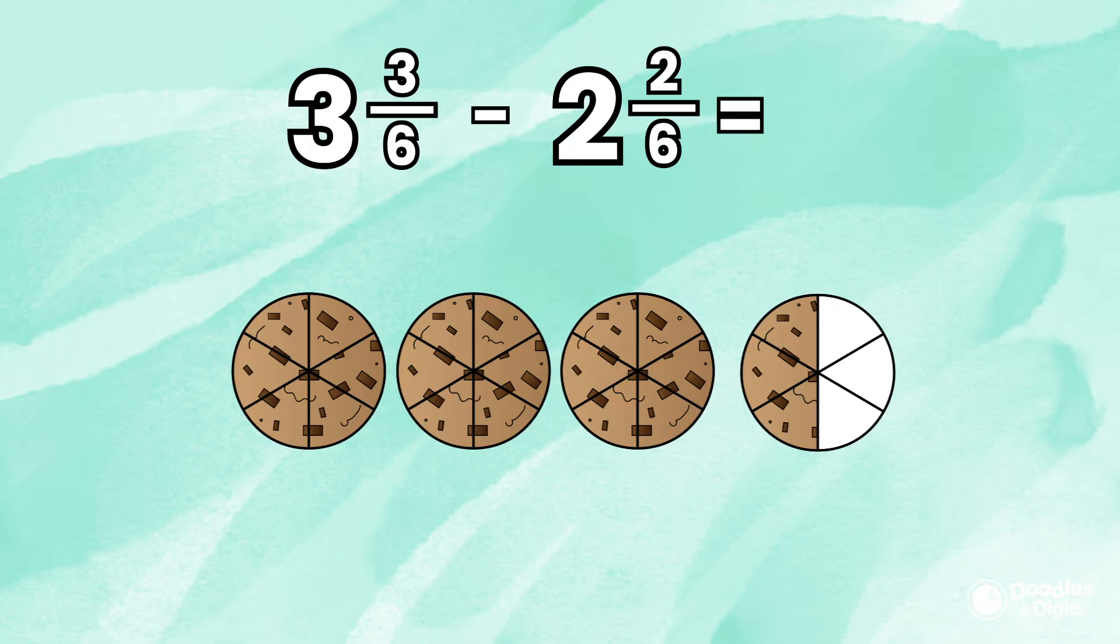I'm first going to look at the fractions. Three-sixths minus two-sixths. I have three-sixths. Now I'm going to take two-sixths away. What do we have left over? One-sixth.